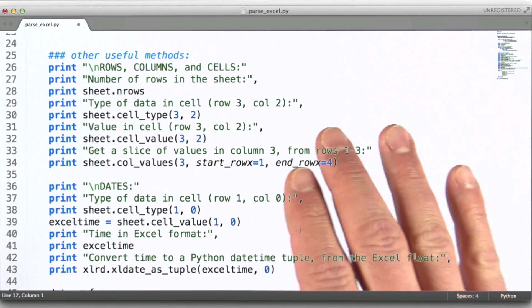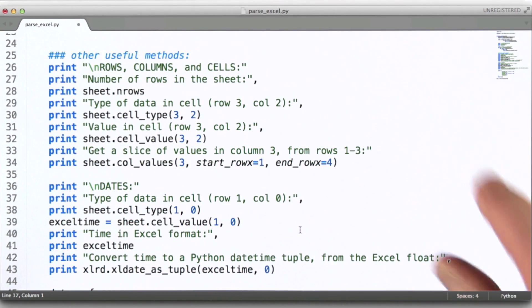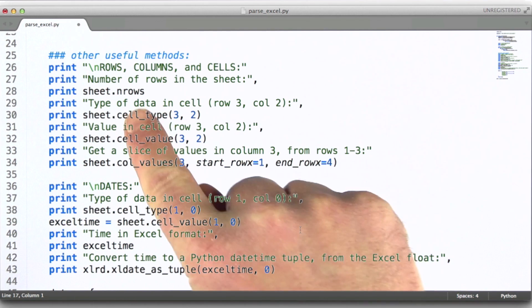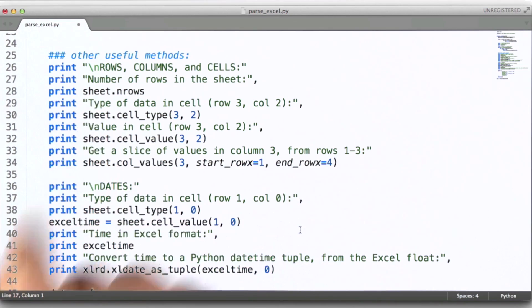In the next piece of our example code, I'm illustrating how to work with rows and columns in XLRD. In this case, what we're going to do here is we're going to simply grab the number of rows for this particular sheet, and then we'll print that out.